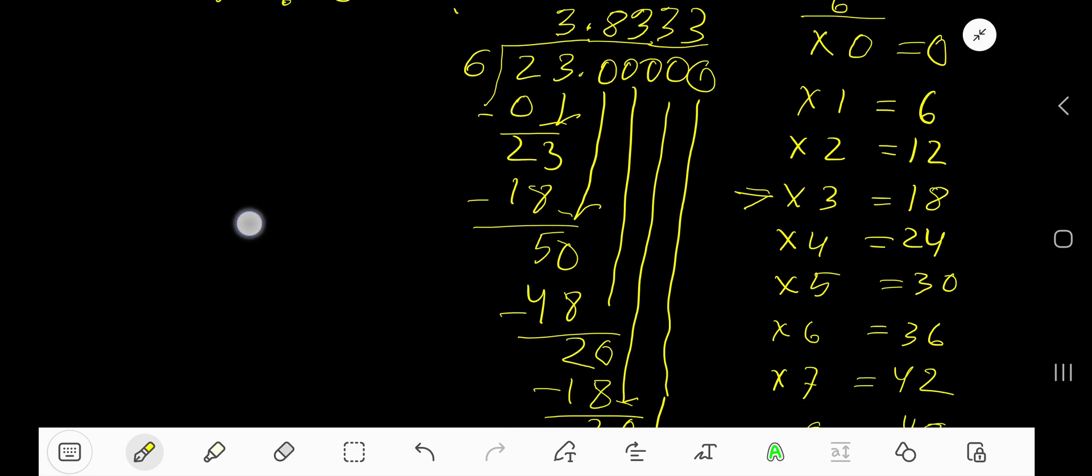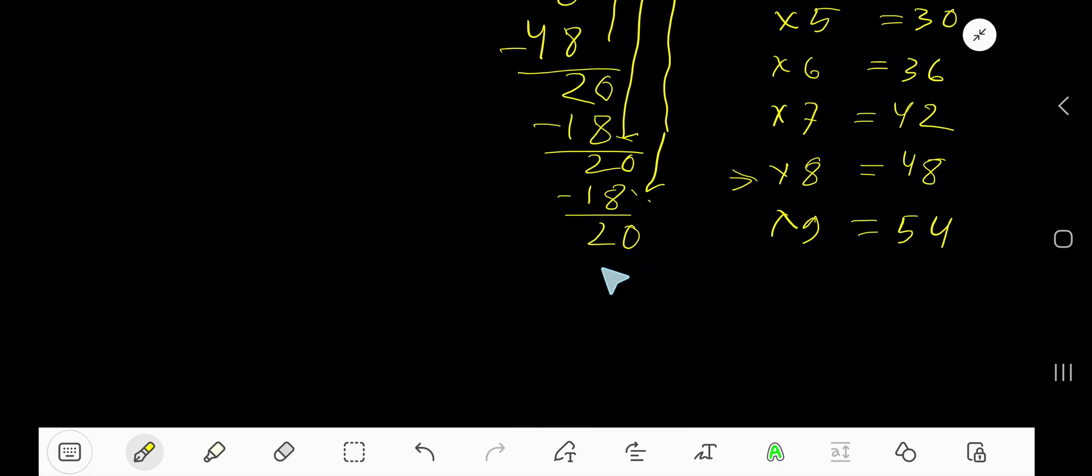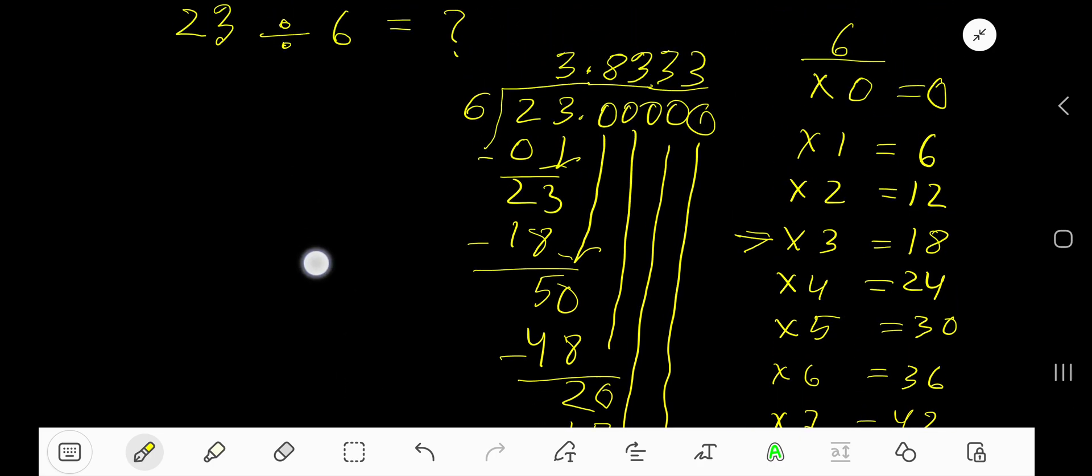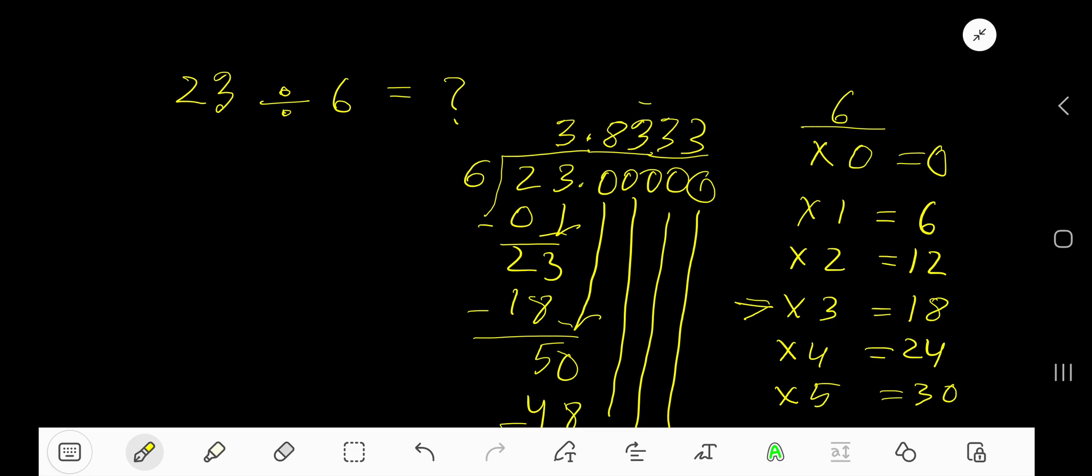Right. So 18, our remainder is 2. Since 3 is repeating, we can place a bar over 3 like this. 3.83 bar.